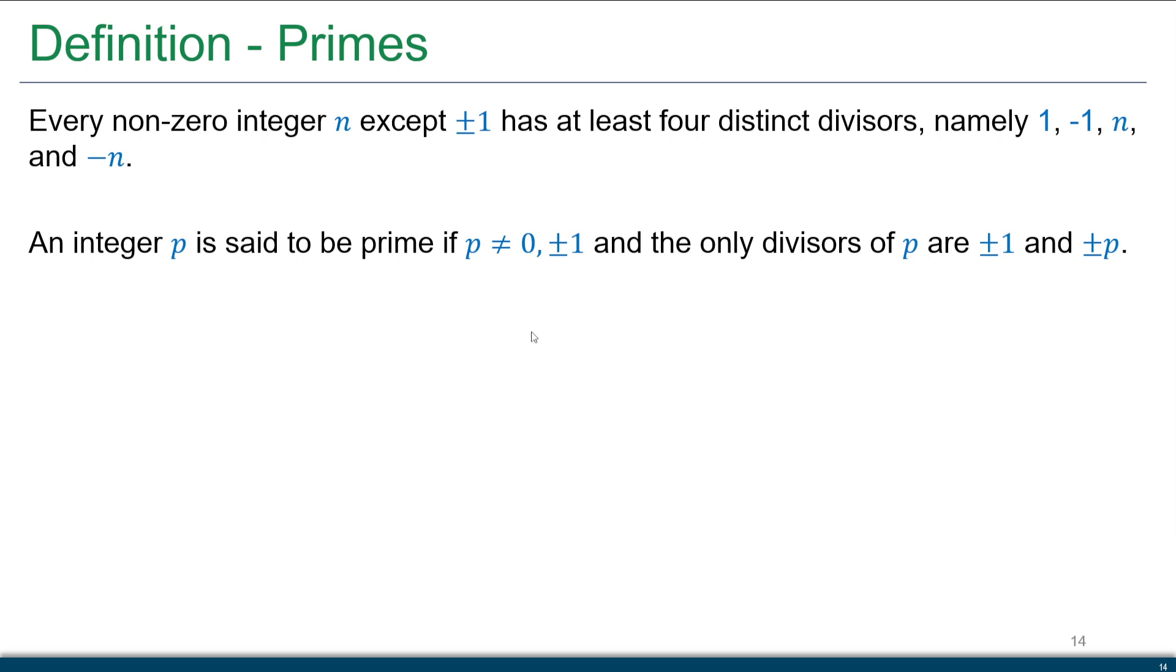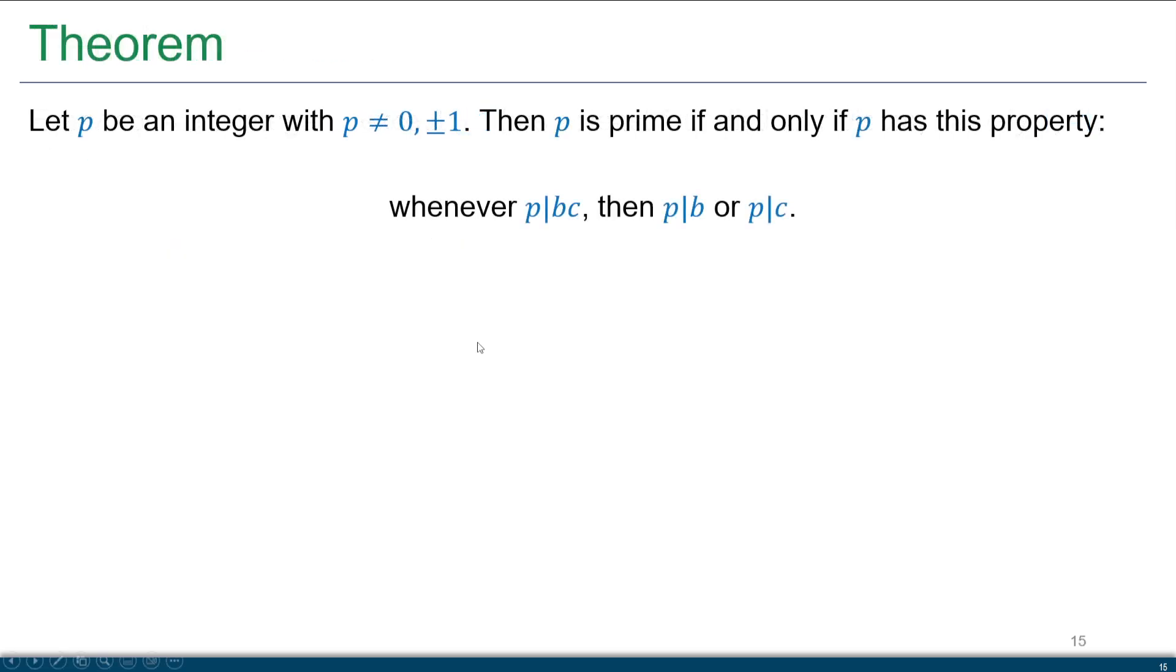So with this definition comes the following theorem. Let p be an integer, and again, p cannot be zero or plus or minus one. Then p is a prime if and only if p has the following property. So whenever p is a divisor of a product of two things, then p has to divide b or it has to divide c. That's not an and condition, it's or. It's simply it's going to divide one or it's going to divide the other.